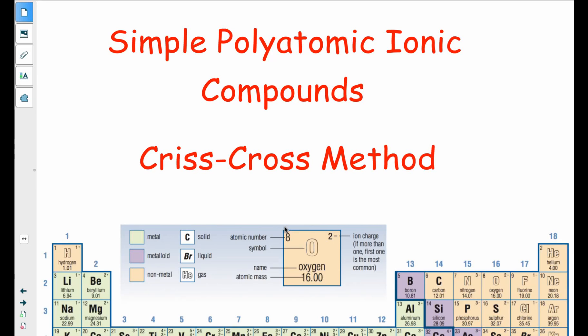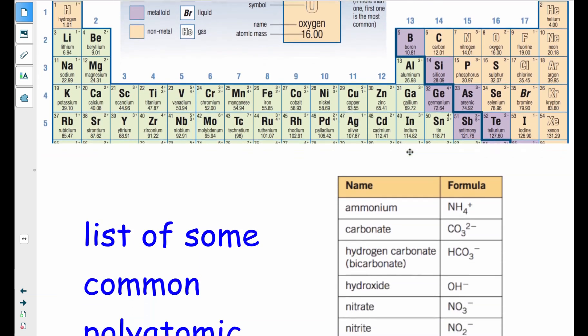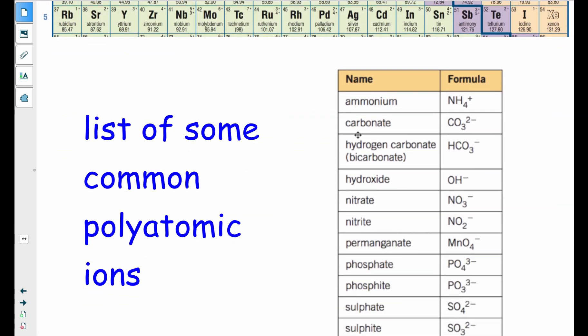Okay, now we're going to look at doing simple ionic compounds, but with polyatomic ions. So once again, we've got to make sure we have our periodic table close by, and on the back of our sheet, we have this table of common polyatomic ions.